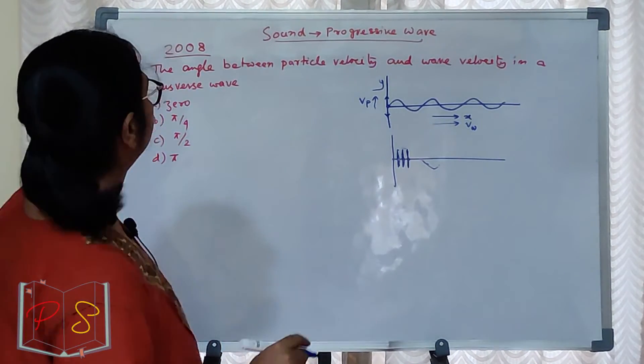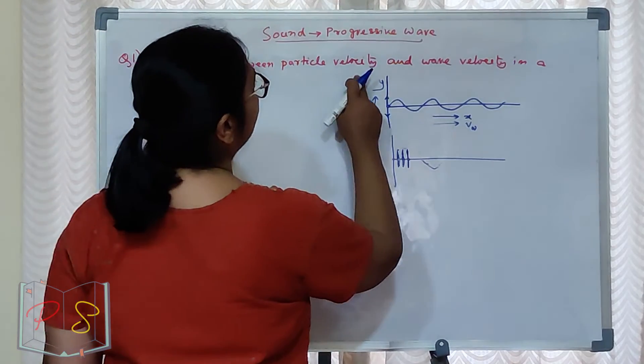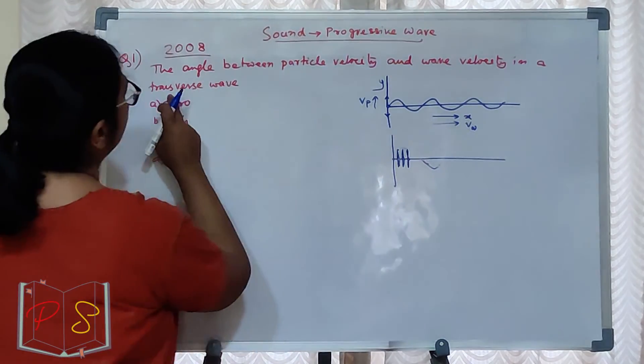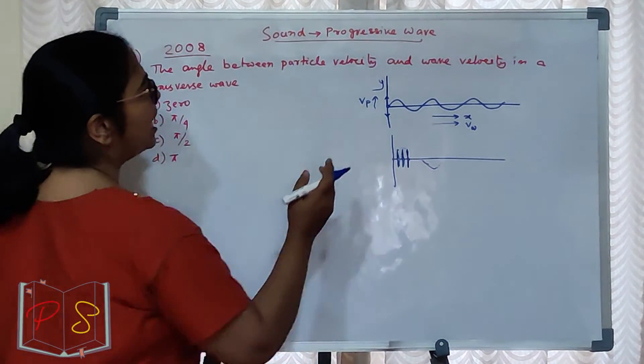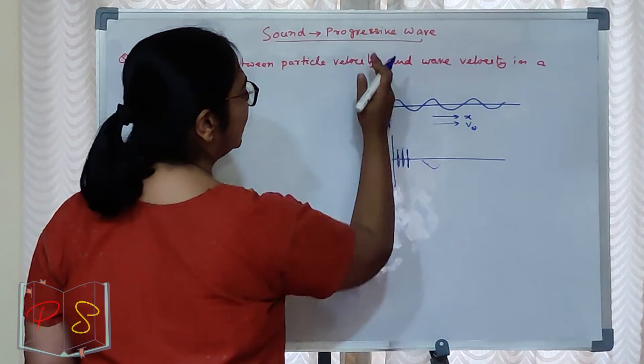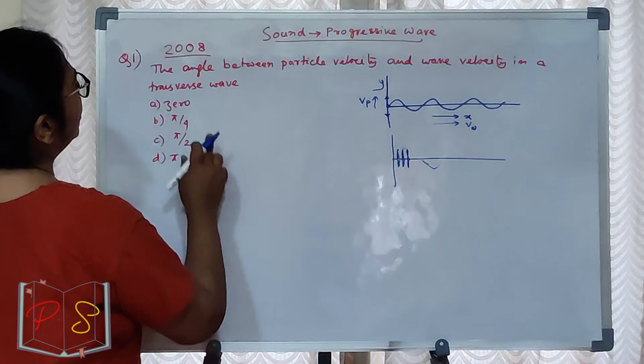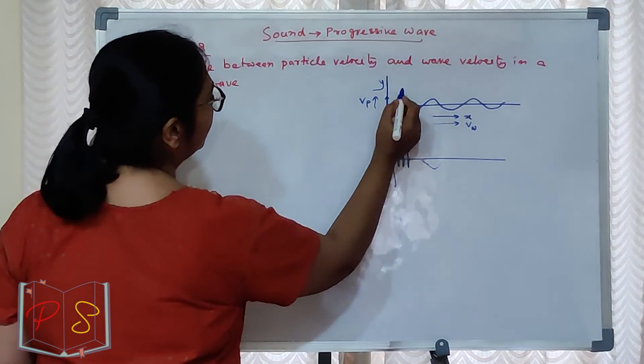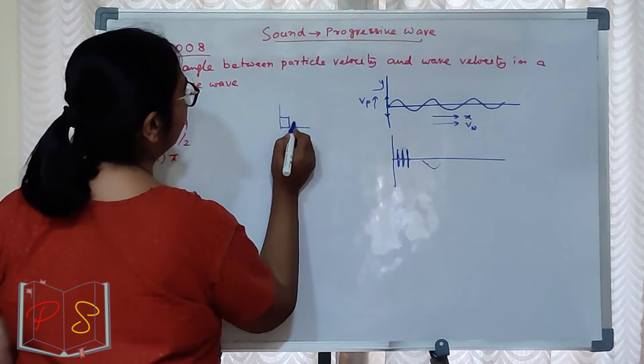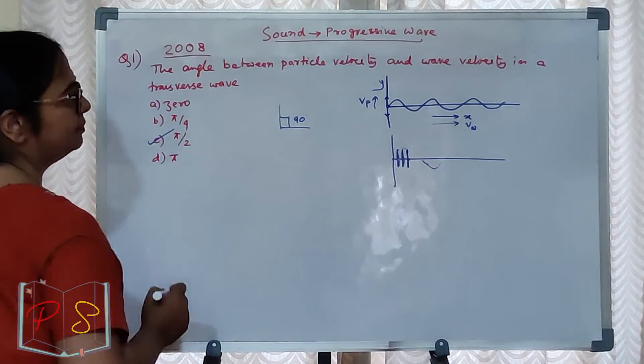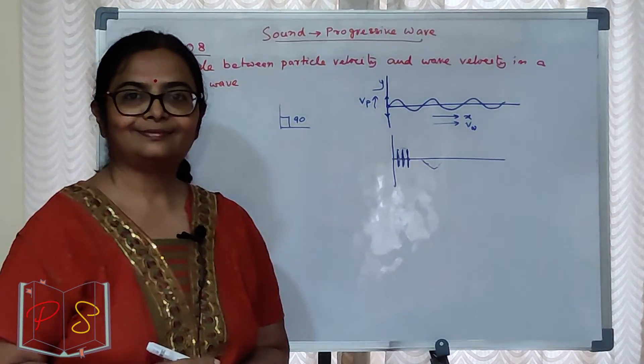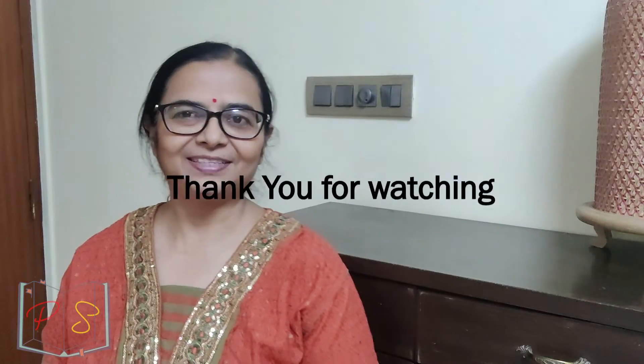So the angle between particle velocity and wave velocity in a transverse wave, how will the angle between them be? 90 degrees. Pi by 2. Correct?